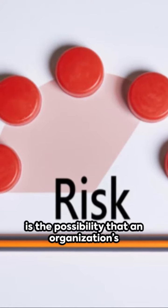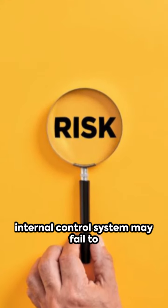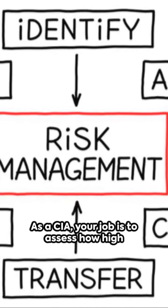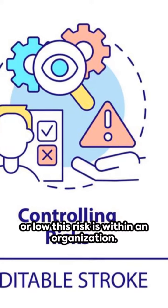Understanding control risk: control risk is the possibility that an organization's internal control system may fail to prevent or detect material misstatements in its financial reports. As a CIA, your job is to assess how high or low this risk is within an organization.